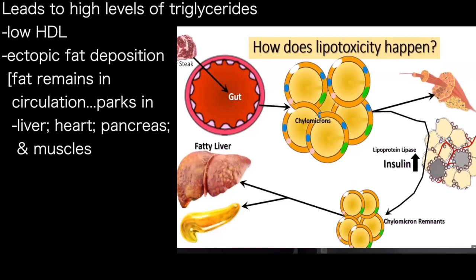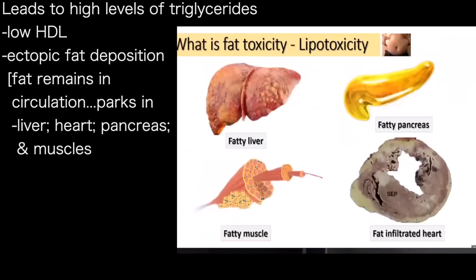What you will end up with is what is called ectopic fat deposition. Ectopic fat is fat that remains in the circulation and is trying to find a place to park itself — and it parks itself in your liver, in your heart, in your pancreas, and in your muscles.